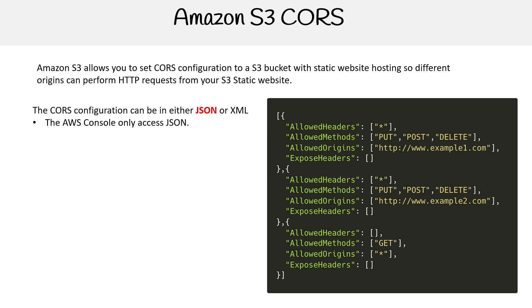Let's take a look on the right-hand side and see what we're doing. We're saying: allow all headers for PUT, POST, and DELETE methods for this specific origin. And then the next one says allow all headers for PUT, POST, and DELETE for this other domain. So we could be getting resources from these two different locations.